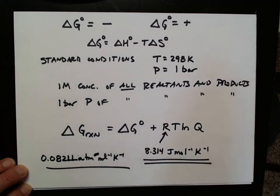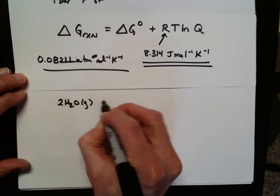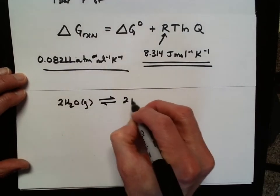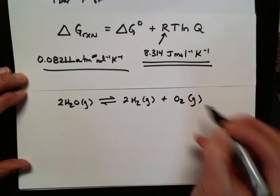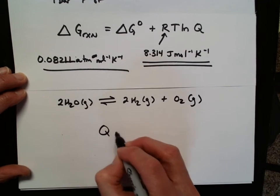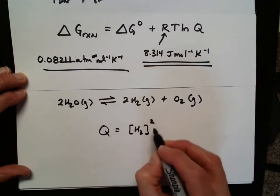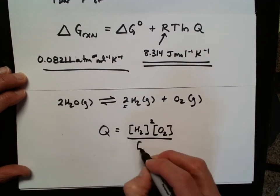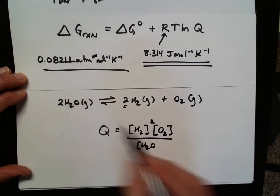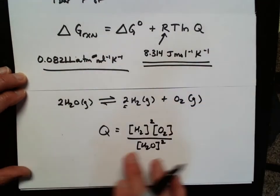And just to remind you what Q is again, let's say I have this particular reaction. Let's just take two waters in the gas phase going to 2H2 in the gas phase and O2 in the gas phase. Well, then Q for this particular reaction would be whatever the concentration of H2 is squared times the concentration of O2 divided by the concentration of H2O. It's gas. It's involved in the process. I'm going to square that.